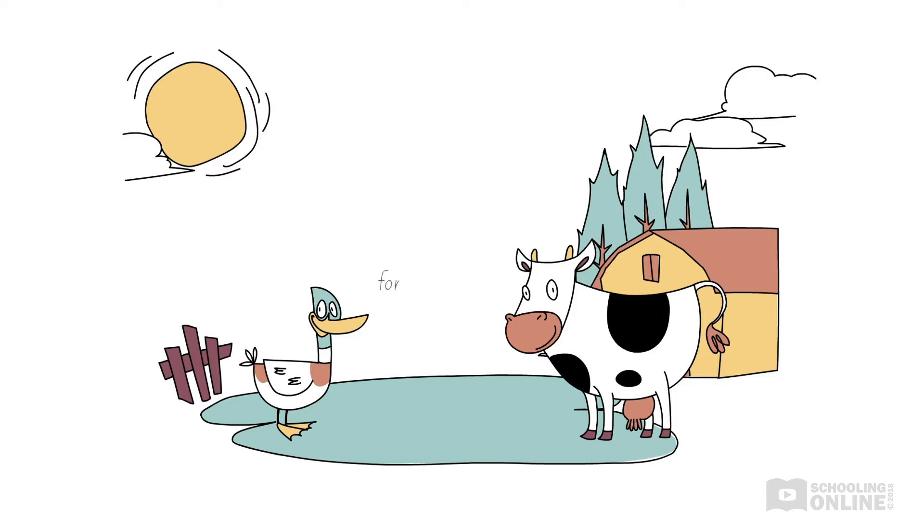More specifically, the cow will exert an attractive force on the duck, and the duck will also exert an attractive force on the cow. They are attracted to each other because they both have mass.